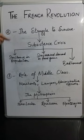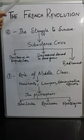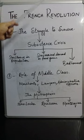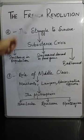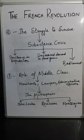So this subsistence crisis was quite common during the old regime, and the monarchy had nothing to say about all these issues. This was one of the major reasons for the French Revolution. We are going to discuss the next point. Thank you.